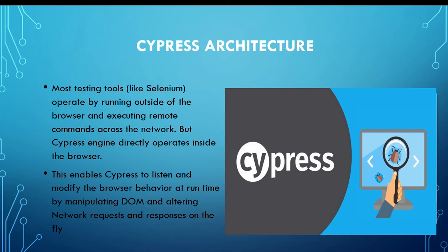But in Cypress there is no middle person — your script directly talks with the browser. The Cypress engine directly operates inside the browser, so it has more control over the browser. This enables Cypress to listen and modify browser behavior at runtime by manipulating the DOM and altering network requests and responses on the fly. In other words, it is the browser itself that is executing your test code.